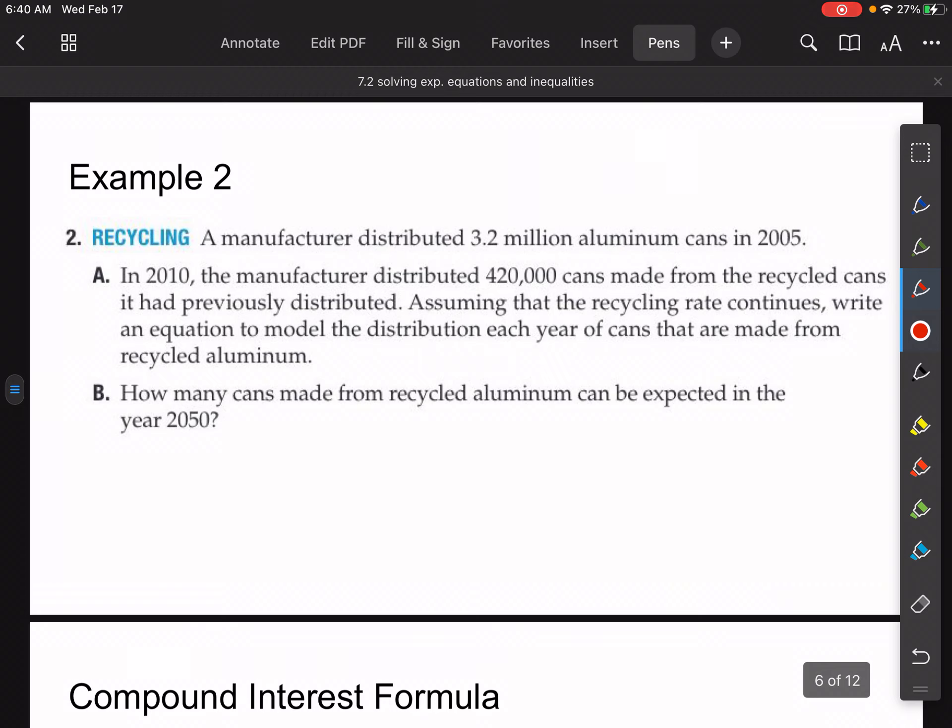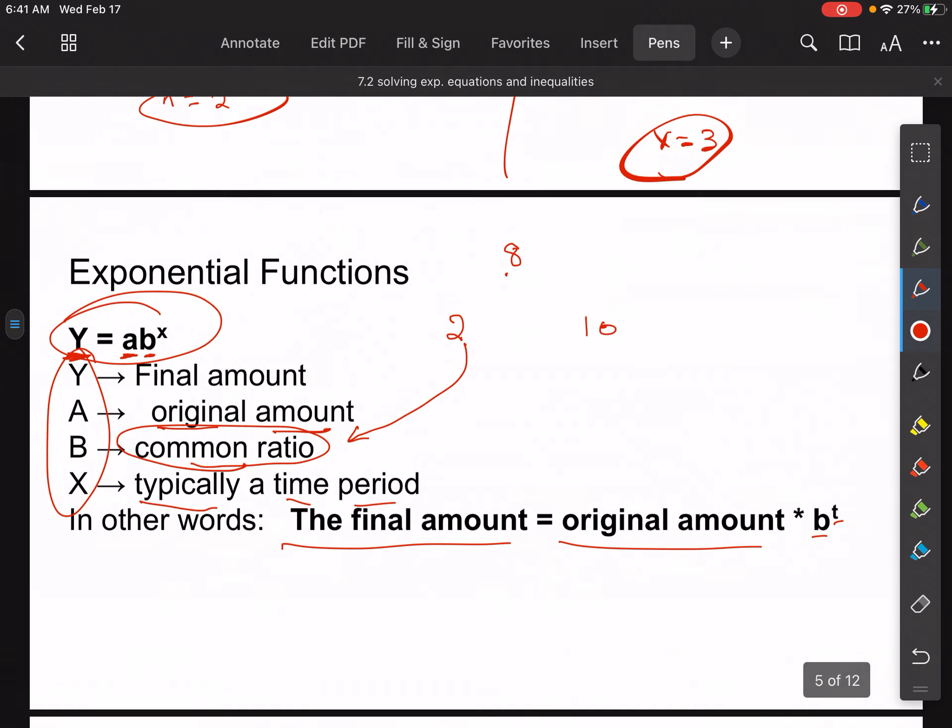So in other words, with exponential functions, the final amount is equal to the original amount times b to the t. That's important. This is very important that you understand what all these things mean. I'm going to test you on it. I'm going to quiz you on it. You're going to have some on your homework. So here's example two. We'll put this to test. There's a manufacturer distributed 3.2 million aluminum cans in 2005. That's important information. We have a year here, we have an amount here.